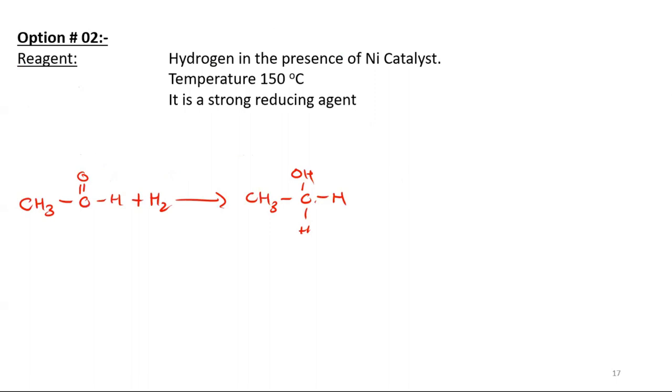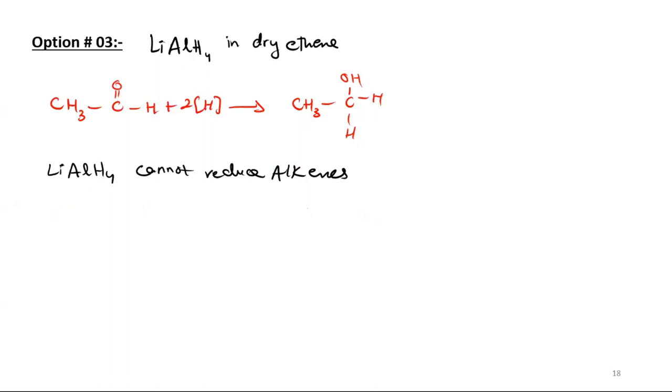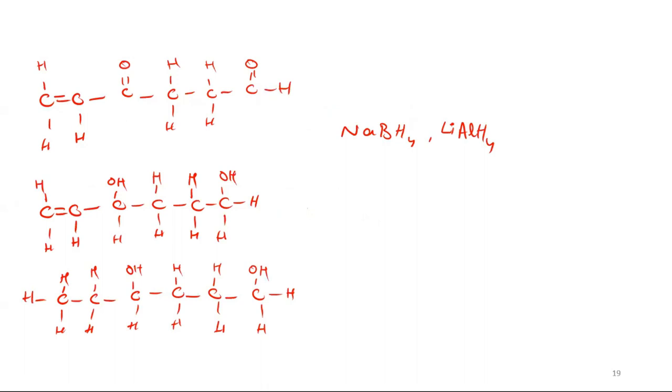Option 2 is the reagent hydrogen in the presence of nickel catalyst at 150 degrees Celsius temperature. It is a strong reducing agent also. You can make primary alcohol from aldehydes. Third option: you can use LiAlH4 in dry ether, and you also get primary alcohol from aldehydes. Please remember that LiAlH4 cannot reduce alkenes. You can see some examples.